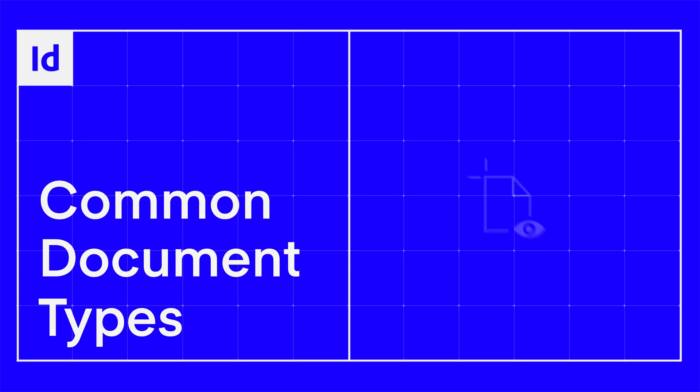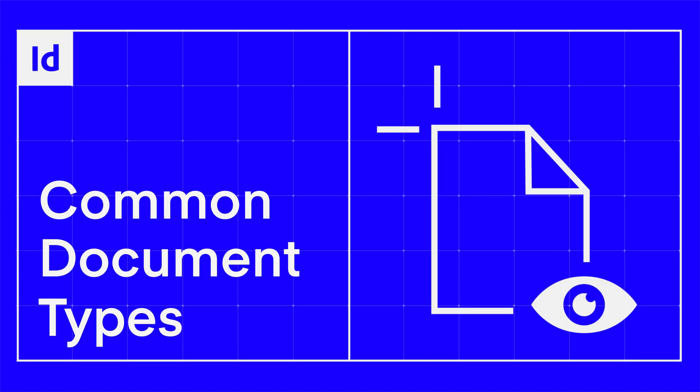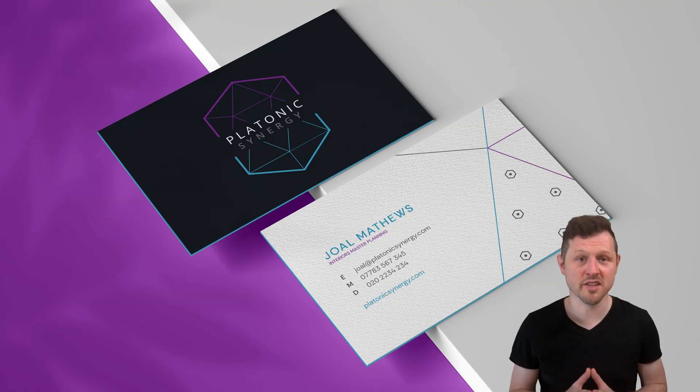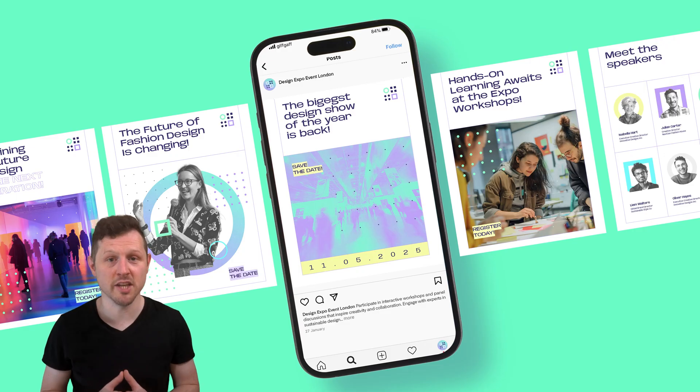One of the keys to mastering InDesign is understanding the wide range of projects you can tackle. At this early stage in the course, it would be good to get an idea of the creative scope that InDesign has to offer — from posters and business cards to booklets and social media graphics. In this video, we're diving into the common document types you can create. This is going to be a big one. After this, you'll have a good insight into the power of InDesign.